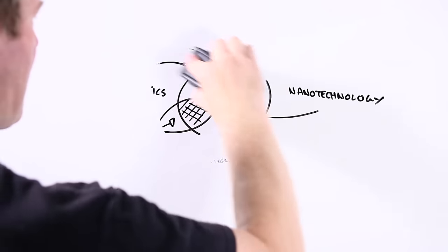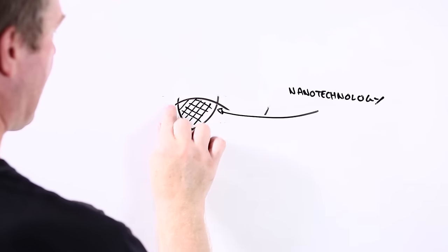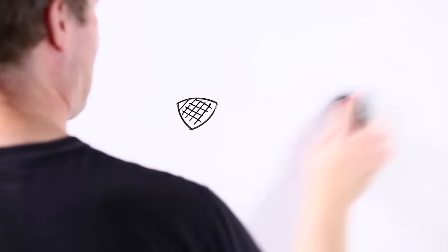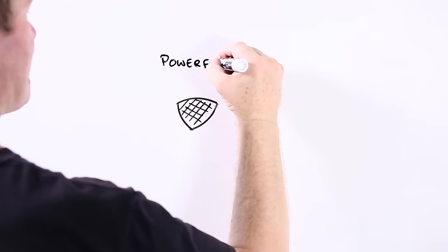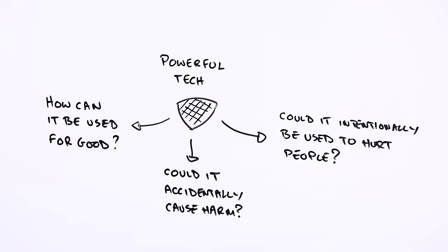The last thing we want is to make better solar cells that also destroy the environment, or design more efficient water filters that just happen to cause more pollution. Because of this, scientists and others are working hard to make sure we develop and use nanotechnology responsibly.